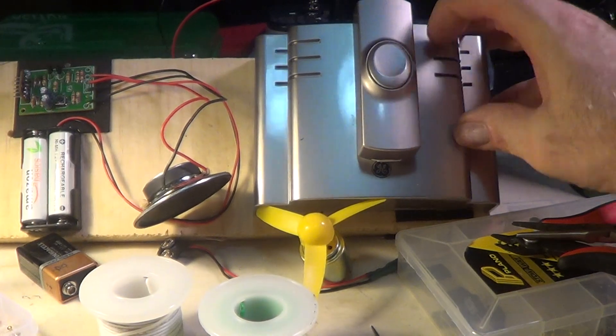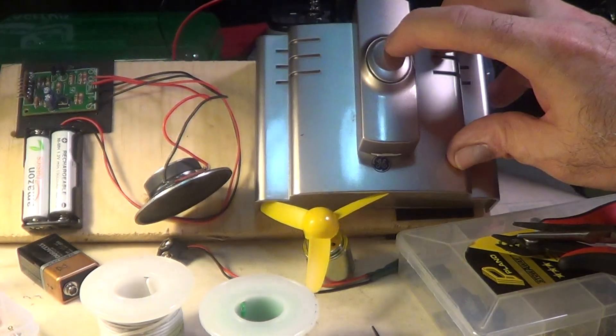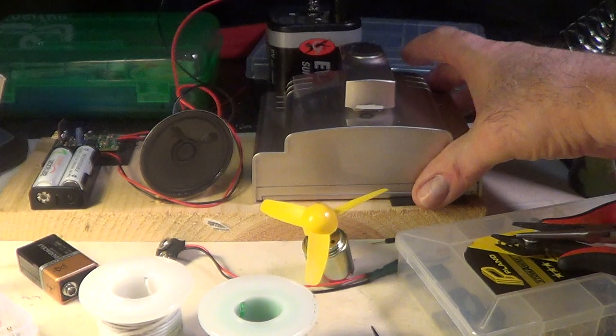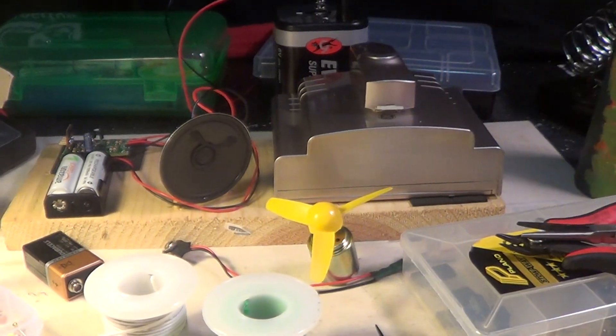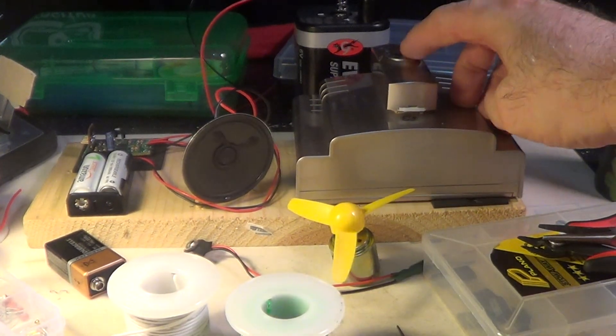You can see it's on a GE doorbell. It's not powered, it's activated by this push button and I'm going to have to add one more part before it's finished. Let's see how it works.